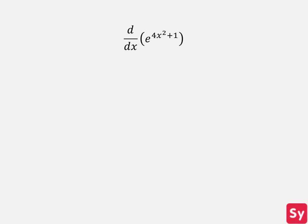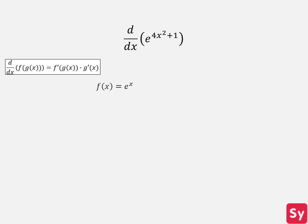Last example, we want to compute the derivative of e to the 4x squared plus 1. We will use the chain rule again to compute the derivative. The outer function f of x is equal to e to the x and the inner function g of x is equal to 4x squared plus 1.